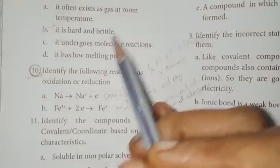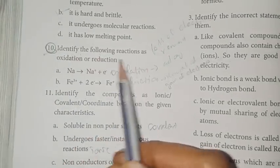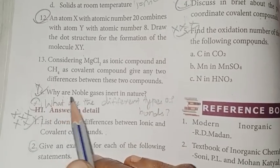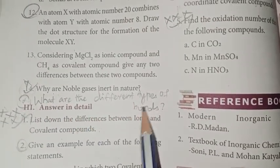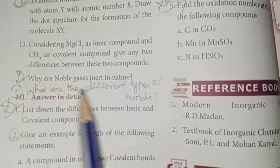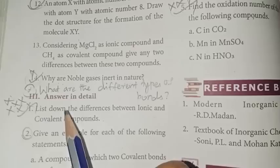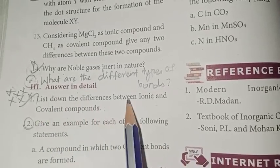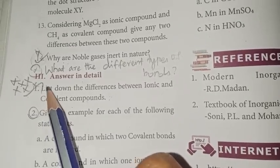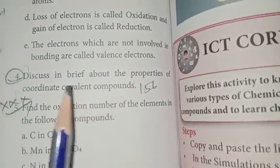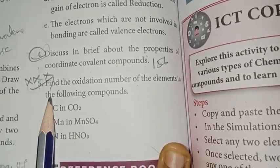Page number 160, 10th question is important: identify the following reaction as oxidation or reduction. The 12th question is important. Question 14: why are noble gases inert in nature? What are the different types of bonds - two marks? List down the differences between ionic and covalent bonds - that is repeated and very, very important. Fourth one: properties of coordinate covalent compounds. Fifth one - fourth district - is important.